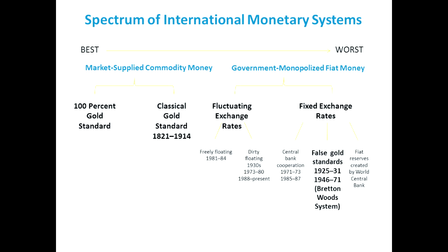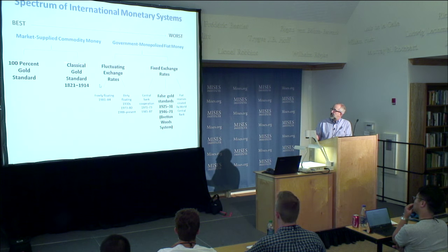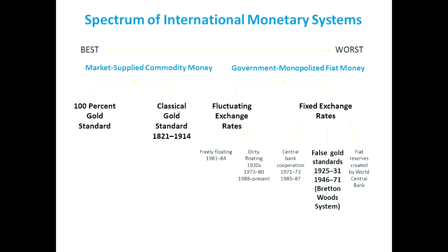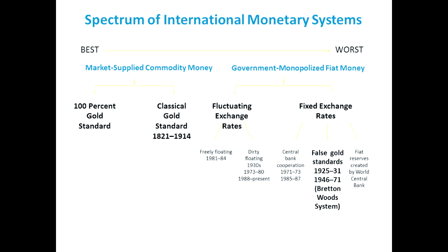If you've taken an international economics class, you'll note that what they do is they mix the best — the classical gold standard, 100% gold standard — with fixed exchange rates. So instead of having a sharp division between market-supply commodity money and government-monopolized fiat money, they go from fixed exchange rates to fluctuating exchange rates and include the Keynesian ideal of fiat reserves created by a world central bank. Austrians don't focus on fixed versus fluctuating. We like the spectrum that puts commodity money on one side and fiat money on the other, and there is a sharp division between the two.